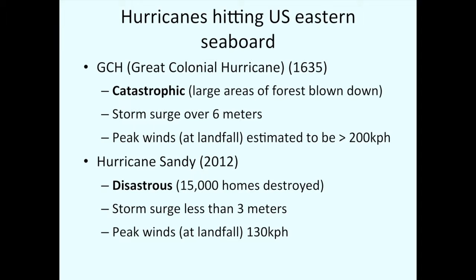You haven't heard much about it because there weren't many people around to talk about it. Hurricane Sandy hit just to the south of the GCH in 2012 — it was disastrous: 15,000 homes destroyed, huge financial impact. The storm surge was less than three meters, but since it flooded the New York City subway, it brought a giant city to its knees. Peak winds were only 130 kilometers per hour. Hurricane Sandy was, by every sense of the word, a disaster. But the GCH, as far as we can tell, had no loss of life and very few structures to blow down. That's the difference between a disturbance and a catastrophe.